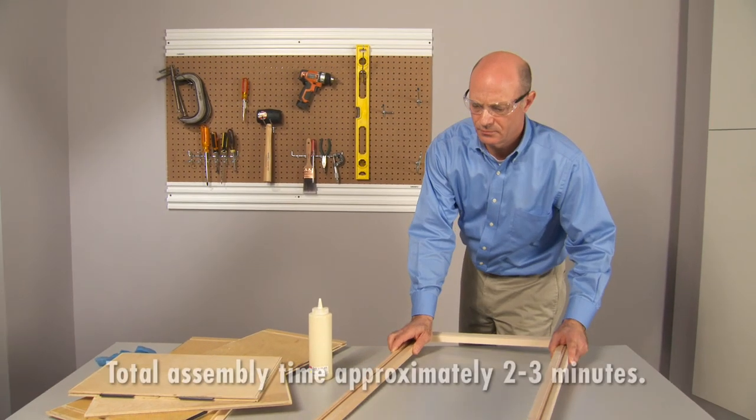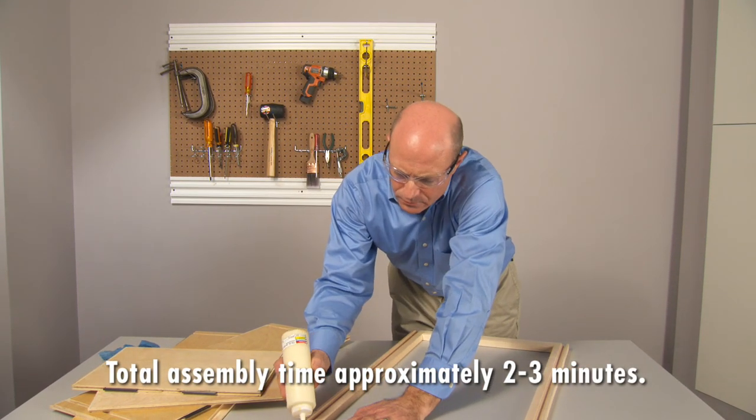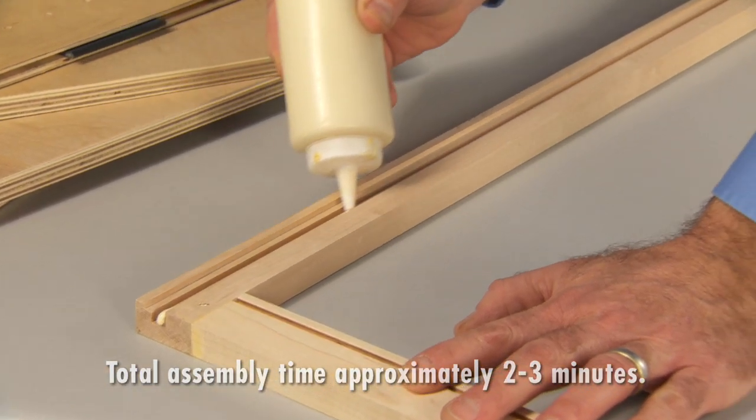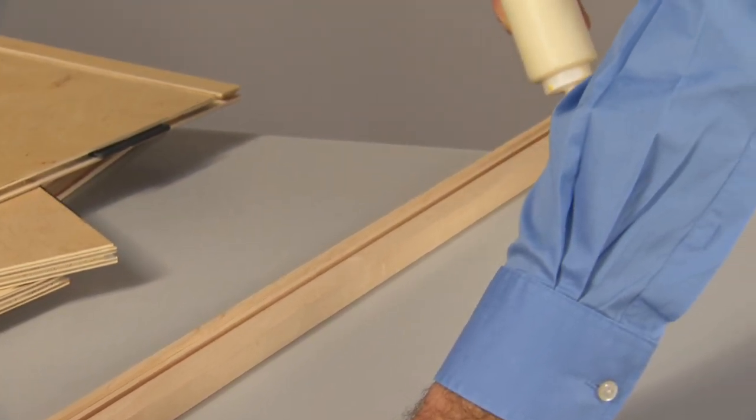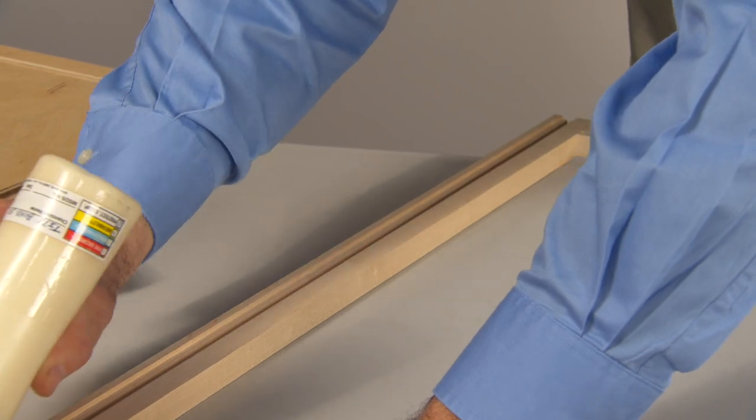Start with the front frame face-down on a flat, clean surface. Apply a bead of glue to both sides of the spline groove in the styles of the front frame.